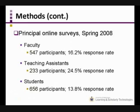The principal survey was an online survey. We sent a recruitment email to prospective participants asking them to participate in this study. This took place in the spring of 2008. We had a large number of participants: 547 faculty, 233 TAs, and 656 students took the survey. As you can see, we had a fair response rate as well.